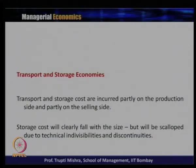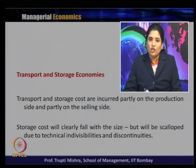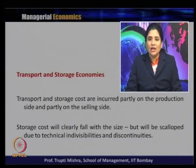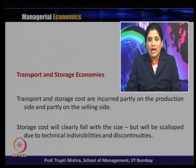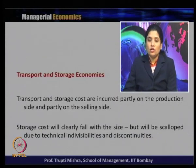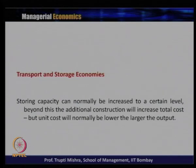Now we discuss the last type of real economy: transport and storage economies. Transport and storage costs are incurred partly on the production side and partly on the selling side. Storage costs will clearly fall with size — if a warehouse is built and 100 units are kept as inventory, the per unit cost is high, but as more units are stored the average unit cost comes down. Storing capacity can normally be increased up to a certain level; beyond this, additional construction will increase total cost, but unit cost will normally be lower the larger the output.